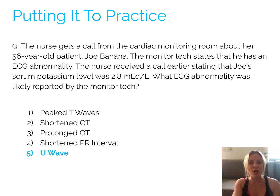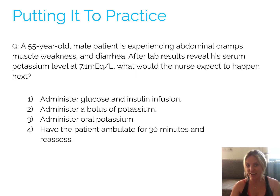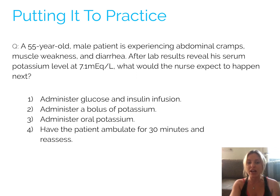Moving on, let's do one more question. A 55-year-old male patient is experiencing abdominal cramps, muscle weakness, and diarrhea. Lab results reveal his serum potassium level at 7.1 mEq/L — that is outside the normal range and way above it, making this hyperkalemia. What would the nurse expect to happen next? Answer options are: administer glucose and insulin infusion, administer a bolus of potassium, administer oral potassium, or have the patient ambulate for 30 minutes and reassess.